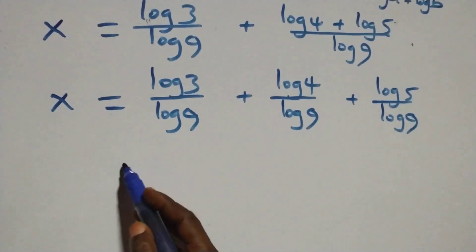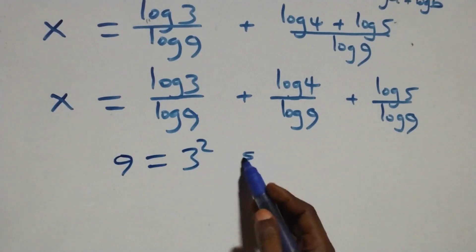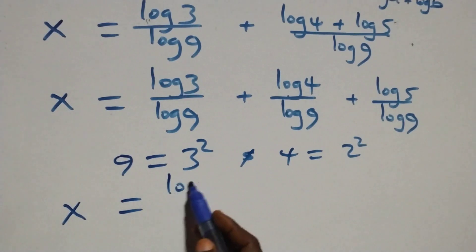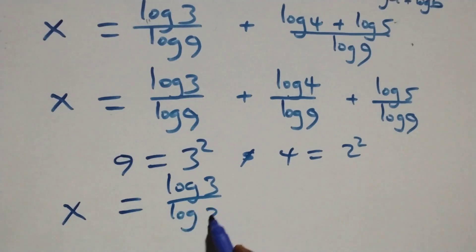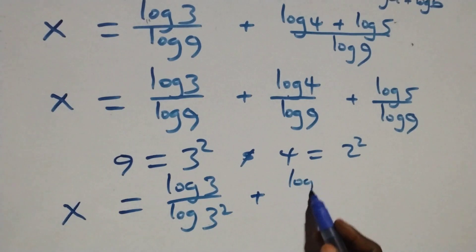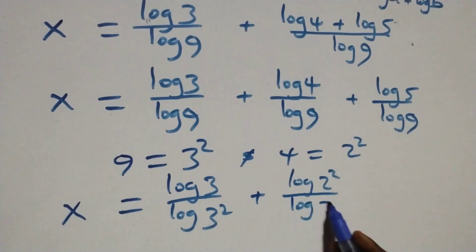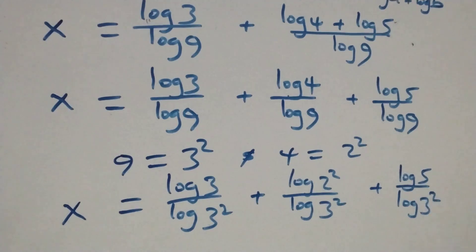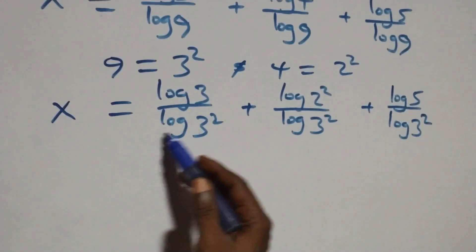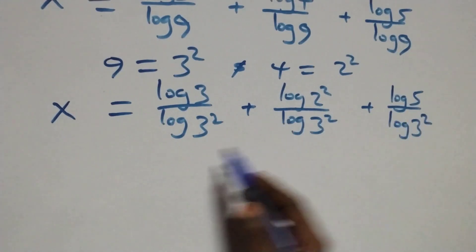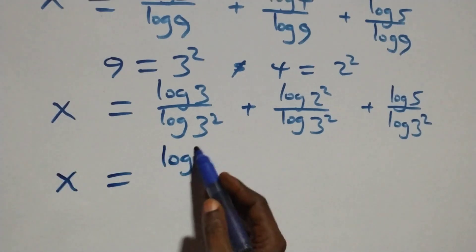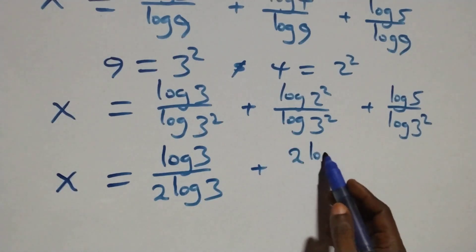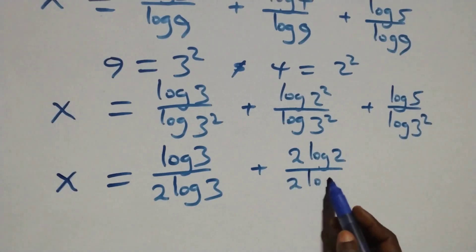We can rewrite 9 as 3 times 3, that is 3 squared, and also 4 as 2 times 2, that is 2 squared. Then what we have becomes x equals log 3 over log(3²) plus log(2²) over log(3²) plus log 5 over log(3²).